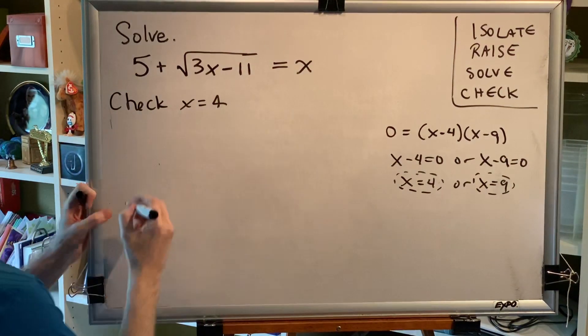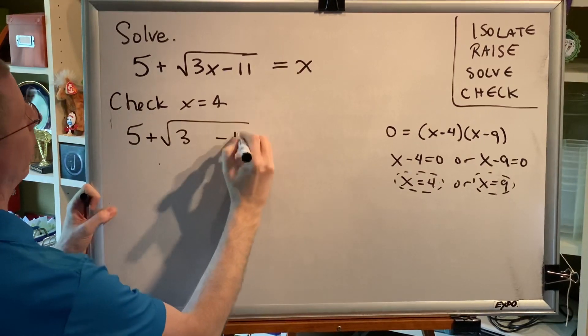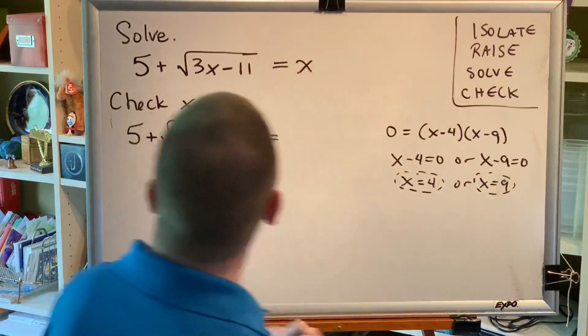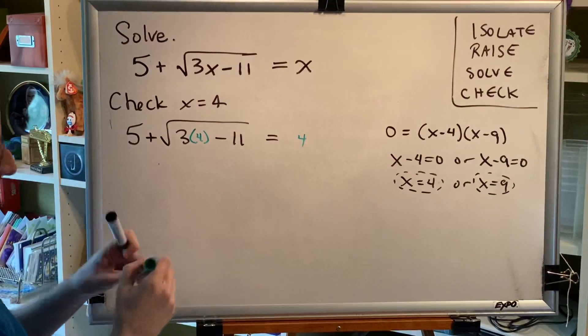Everywhere we see an x, we'll put 4. And I will color code that to make that very easy to see.